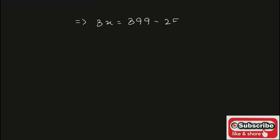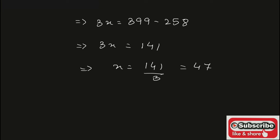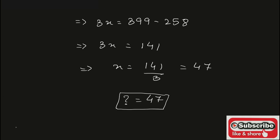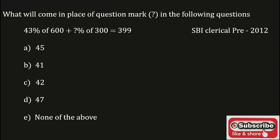It becomes 3x is equal to 399 minus 258, which gives 3x is equal to 141. Therefore x is equal to 141 upon 3, which is equal to 47. The value of the question mark is 47. D is the correct option for this question.